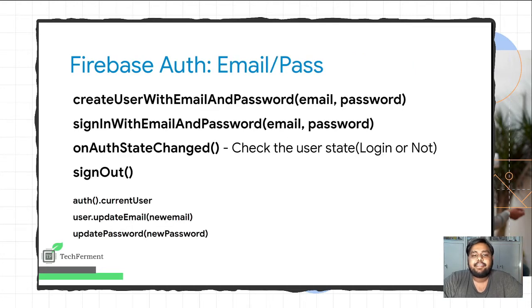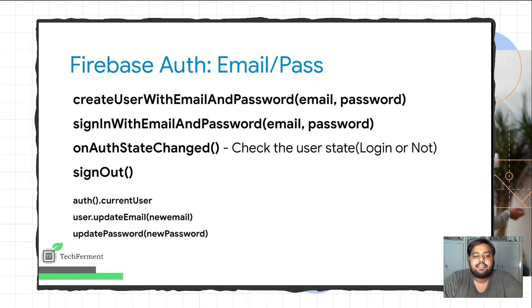For implementing email/password authentication there are a few methods. First, createUserWithEmailAndPassword — you pass email and password to create a user in Firebase. If the user is already created, use signInWithEmailAndPassword, passing the email and password. Third, to check the user's state, call onAuthStateChanged. Fourth, use signOut for logging the user out. You can also use auth.currentUser to get current user details, and updateEmail or updatePassword to update credentials.